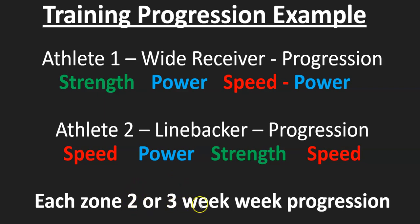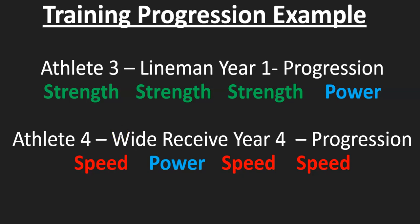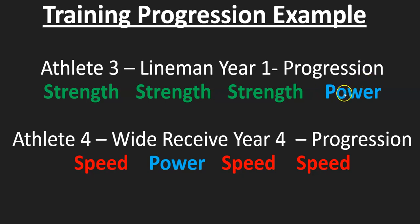Each phase would be two to three weeks. Here's a training example of a first-year lineman — like many of my freshmen across different sports — they test into strength, strength, strength. A lot of high school coaches will find this might be their model, and they may not get into power until later. For a fourth-year or more experienced athlete, the progression could be speed, power, speed, speed — sometimes dropping back to power, or whatever it may be.